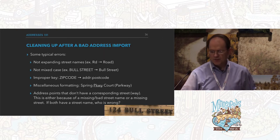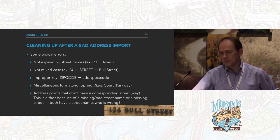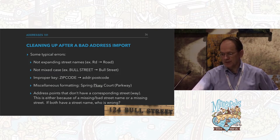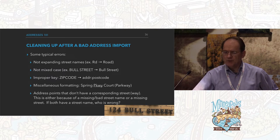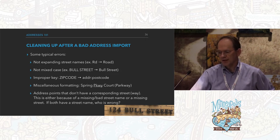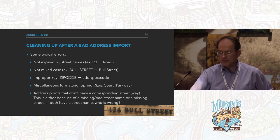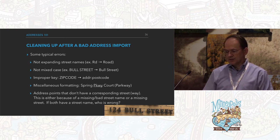What goes wrong? Some typical import errors: they don't expand the street name — RD should be Road; they don't mixed-case the street name, so BULL STREET is all uppercase; they use an improper key like zip_code instead of addr:postcode; weird formatting like Spring Parkway Court where their parser expanded Court but missed Parkway. And in the QA section, address points that don't have a matching street — if you put down addresses, you can link them up to their streets and see what falls out.